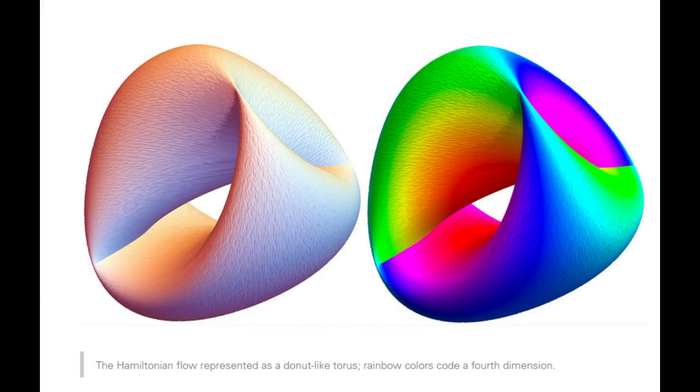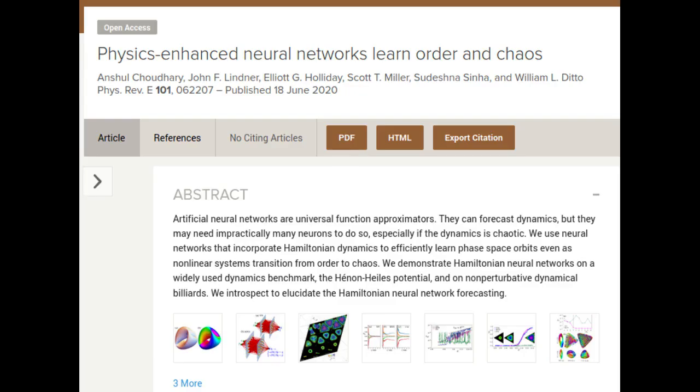Researchers from North Carolina State University have discovered that teaching physics to neural networks enables those networks to better adapt to chaos within their environment. The work has implications for improved artificial intelligence applications.